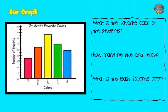Seven students like red. Eleven like orange. Fifteen like yellow. Twelve like green. And only nine like blue. What is the favorite color of the students? Most of the students like yellow.